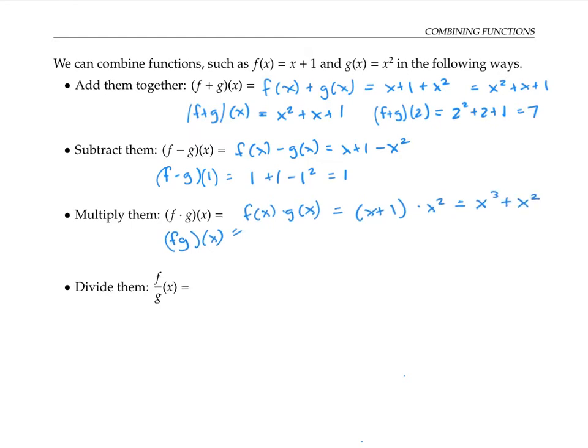The notation f divided by g of x means I take f of x and divide it by g of x. So that would be x plus one divided by x squared.